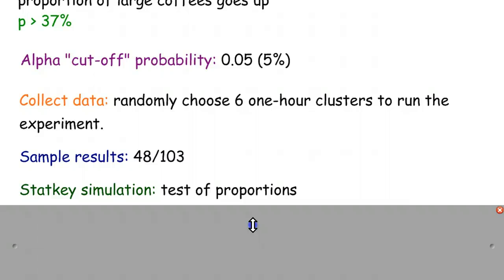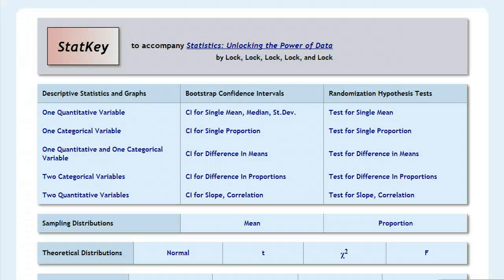So we're going to throw our data, our 48 out of 103, into StatKey, and we're going to use a test of proportions. If you're on the StatKey homepage here, you're going to see our descriptive statistics, the confidence intervals, and then the hypothesis tests over on the far right.